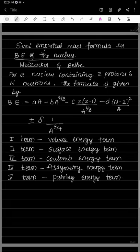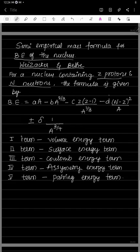We will now start with the semi-empirical mass formula. This is the formula used to calculate the binding energy of the nucleus. This formula was given by Weizsäcker and Bethe. Consider a nucleus containing Z protons and N neutrons. The binding energy formula is also called the Weizsäcker-Bethe formula. This is very important from the exam point of view.